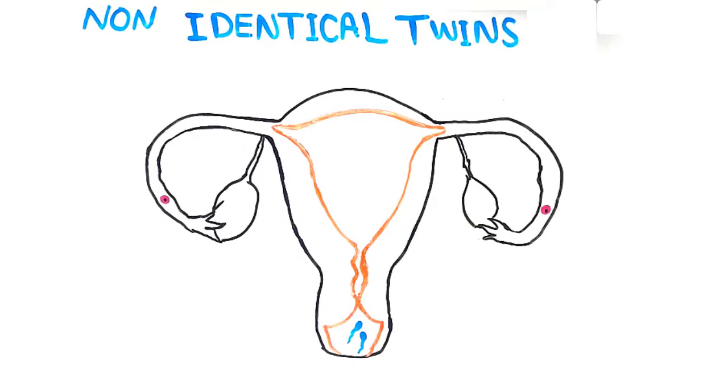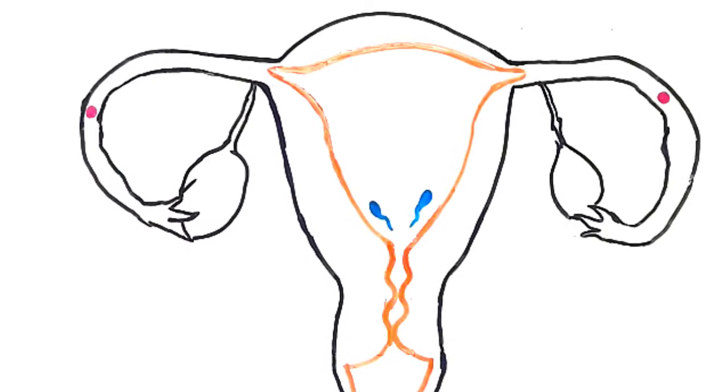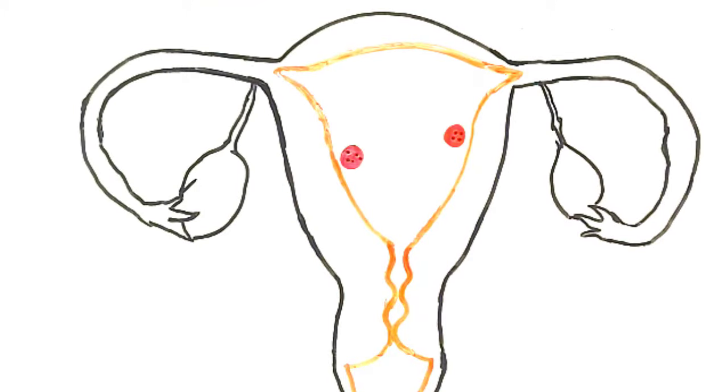On the other hand, non-identical or fraternal twins are formed when two separate eggs develop in the mother's body, and they get fertilized by two separate sperm.